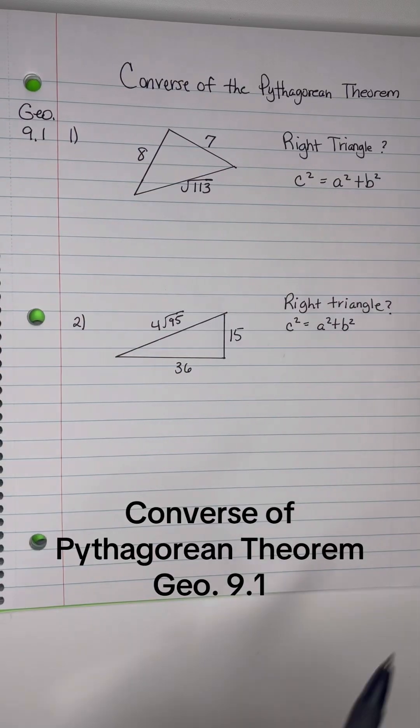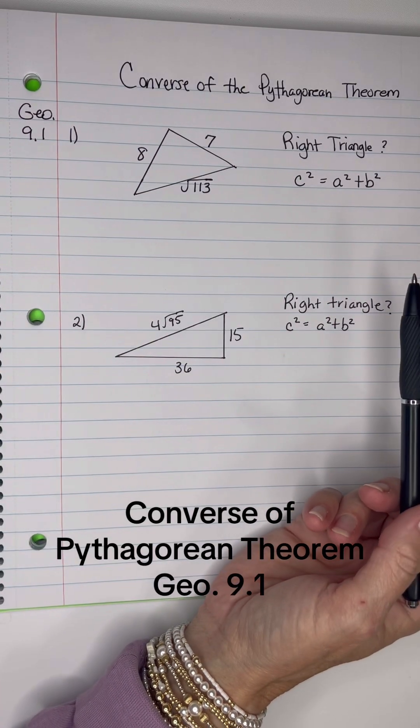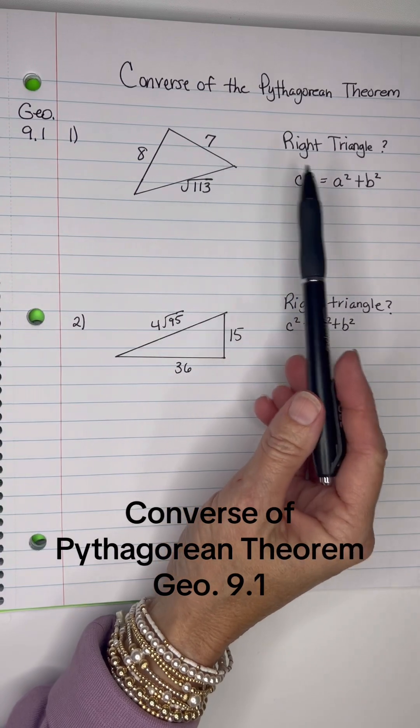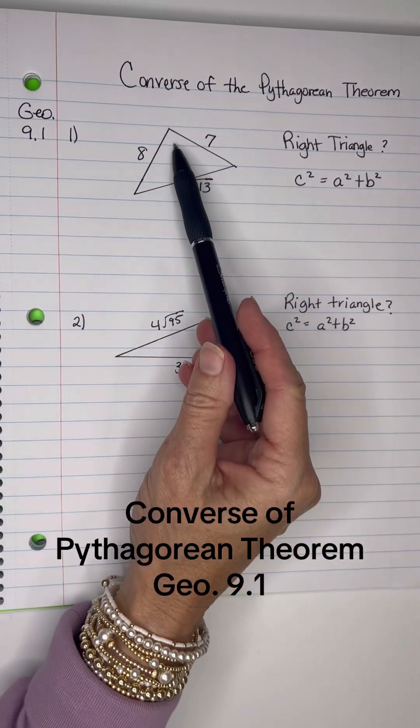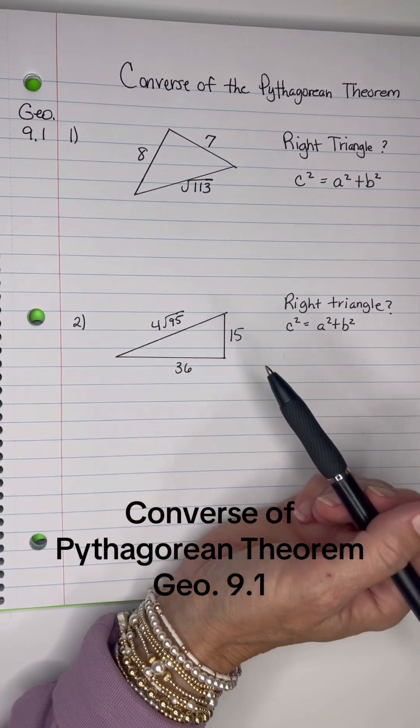Okay, I'm going to show you how to use the converse of the Pythagorean Theorem. That's when you're trying to decide if something is a right triangle or not, and maybe they don't have a little box up in the corner that looks like it's a right triangle.